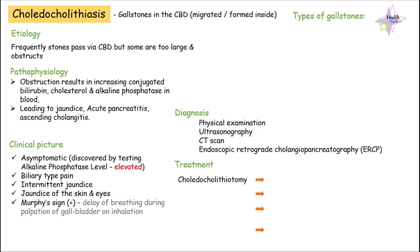Hi guys, it's Med by HealthHush. In today's topic we'll be speaking about choledocholithiasis. By the name itself: 'chole' means gallbladder, 'doco' means involvement of the bile duct, 'lithiasis' means stone formation. This basically means gallstones present inside the common bile duct — stones that have migrated from the gallbladder or stones that are formed inside the common bile duct.